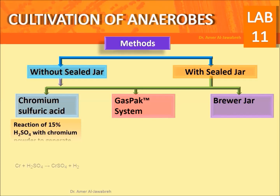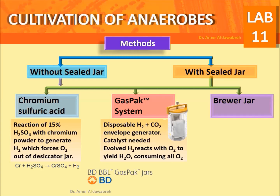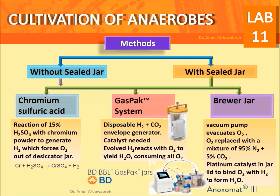Chromium sulfuric acid method: reaction of 15% H2SO4 with chromium powder generates hydrogen, which forces oxygen out of the anaerobic jar. Gas pack system: uses a disposable hydrogen and CO2 envelope generator; a catalyst such as palladium is needed. The evolved hydrogen reacts with oxygen to yield water vapor, consuming all oxygen. Brewer jar: a vacuum pump evacuates oxygen, which is replaced with a mixture of 95% nitrogen and 5% CO2; a platinum catalyst in the jar binds oxygen with hydrogen to form water.